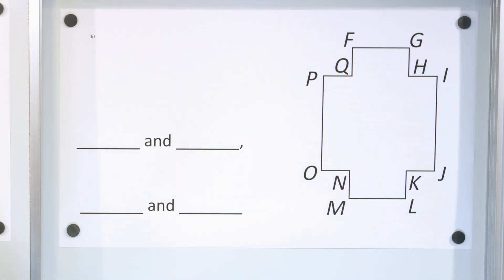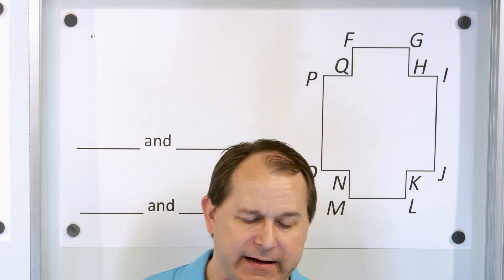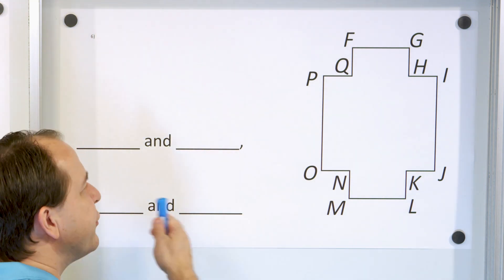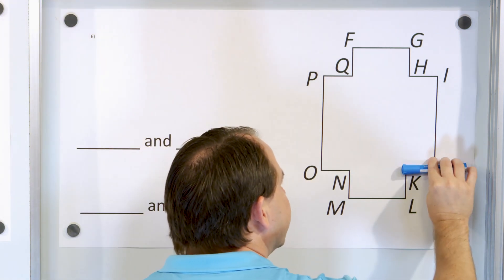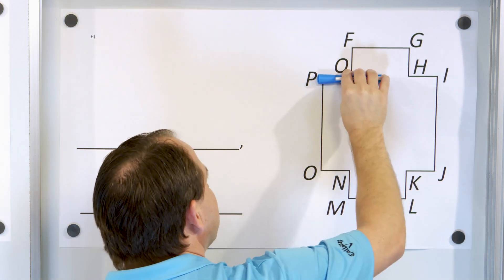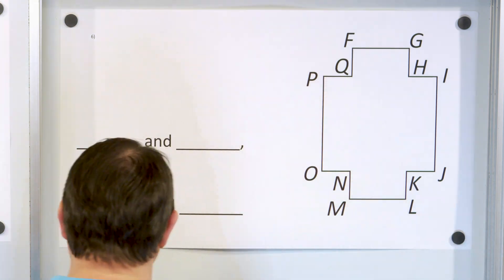Here is our last problem. Kind of a funky looking weird figure here. The question is name two pairs of intersecting line segments in the figure below. Now there's tons of line segments here that intersect. So your answer is going to be different than mine. This segment intersects with this one. I mean, you can go all the way around and you can name lots and lots of them. So all we need is two pairs.